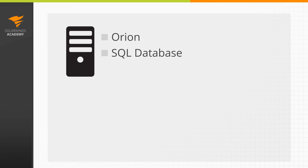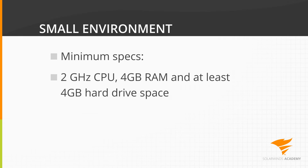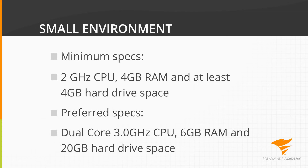Let's begin by taking a look at a small environment. This will be of interest to those of you that have an AL150 or AL500 license. My recommendation would be to place your SQL database and Orion installation on separate servers. If you already have an SQL server available that matches our SQL server recommendations, you will find that you'll get better performance placing your database there rather than running SQL and Orion on the same server, where they'll be competing for limited resources. The minimum requirements for a small environment are a 2GHz CPU, 4GB of RAM, and at least 4GB of hard drive space. Ideally, for a small installation, a dual-core 3GHz CPU, 6GB of RAM, and 20GB of hard drive are preferred. Keep in mind that these requirements are on top of the base operating system requirements.